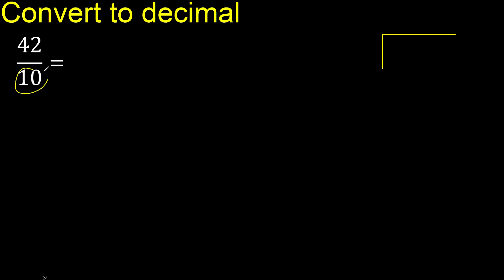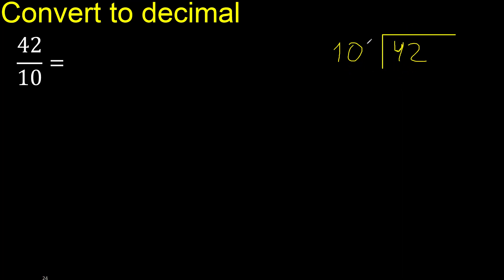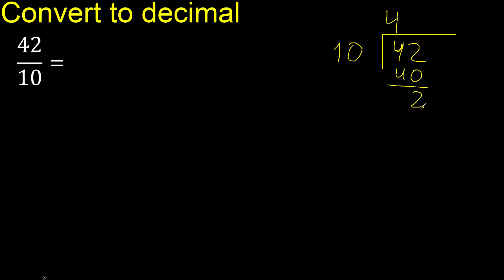42 divided by 10. 42 is not less than 10, therefore 10 multiplied by which number is nearest to 42 but not greater? Multiply by 5 is 50, which is greater. Multiply by 4 is 40, which is not greater. Subtract: the remainder is 2.